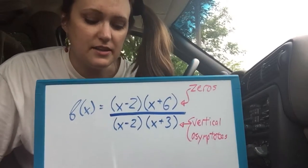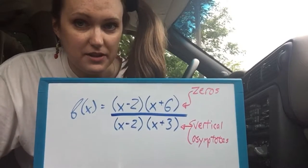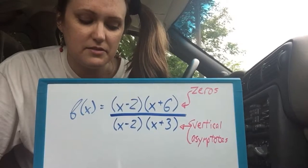So let's say if you're given a function like this, it's a rational function because it's like a fraction. There's things on top and things on bottom.